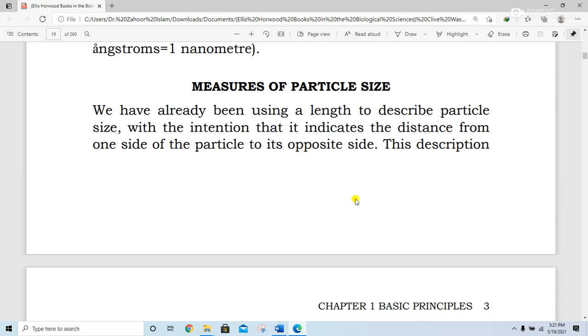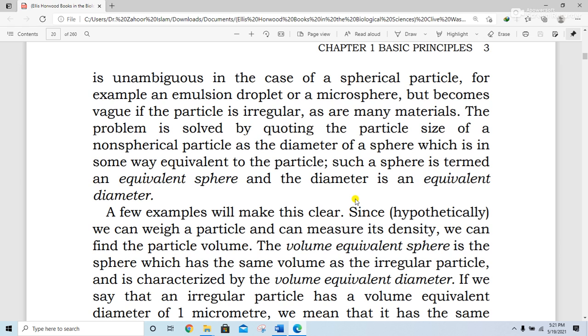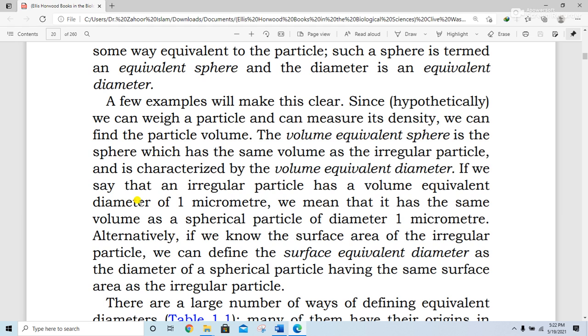Measurement of particle size. We have already been using length to describe particles with the intention that it indicates the distance from one side of the particle to its opposite side. The description is unambiguous in the case of spherical particles, for example an emulsion droplet or a microsphere, but it becomes weak if the particle is irregular. The problem is solved by calling the particle size of a non-spherical particle the diameter of a sphere which is in some way equivalent to the particle. Such a sphere is called an equivalent sphere and the diameter is an equivalent diameter. A few examples will make this clear.